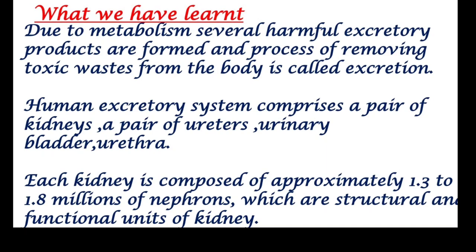We will recall today's class once again. First, due to metabolism, several harmful excretory products are formed and the process of removing toxic waste from the body is called excretion. Second, the human excretory system comprises a pair of kidneys, a pair of ureters, urinary bladder, and urethra. Third, each kidney is composed of approximately 1.3 to 1.8 million uriniferous tubules or nephrons, which are the structural and functional units of the kidney.